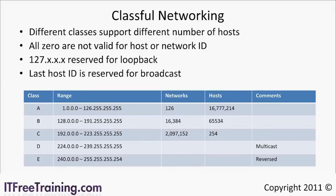The next class is class B. This class has 16,384 networks and 65,534 hosts per network. Both class A and class B have a lot of hosts per network. The original system of allocating IP addresses based on class created a lot of wasted IP addresses. The class C network has 2,097,152 networks with 254 hosts per network. This network is more suitable for smaller networks, however even if you have 100 computers on a network there is still a lot of wasted IP addresses.